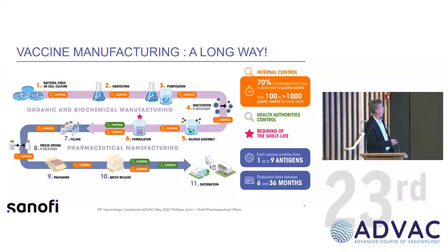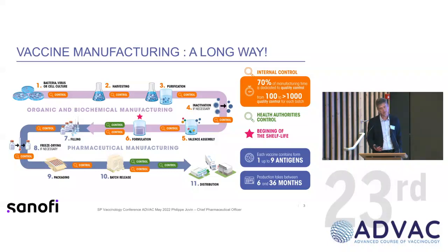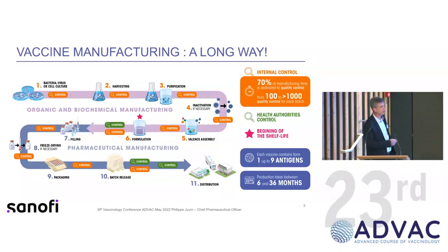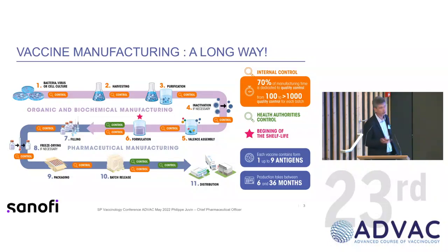Then we start the filling operations — an aseptic process to achieve a sterile product, with quality control. We fill either in vials or in syringes ready for injection. Some vaccines cannot be stored in liquid form during shelf life and must go through freeze-drying; at the time of use they will need to be reconstituted. After quality control, the usual final steps include packaging in single-dose or multi-dose packs for vaccination centers, as was the case for COVID.